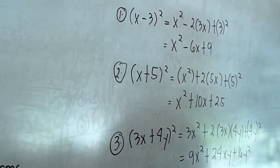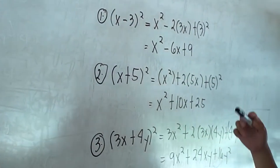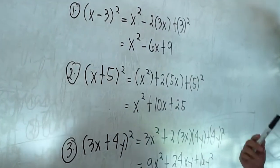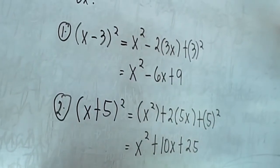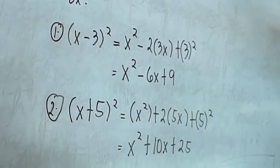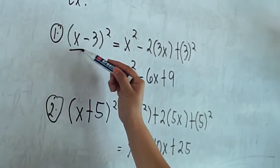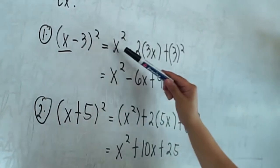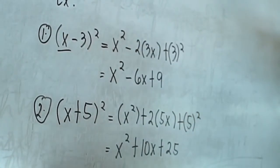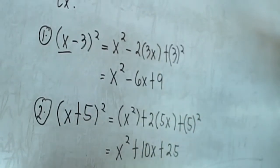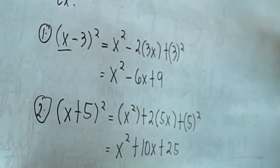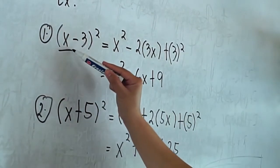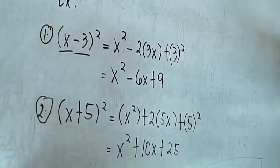In our given example, (x minus 3) squared is equal to — first we have to square the first term. The first term here is x, so the square of x is x squared. Then second, twice the product of the first and the last term. This is the first term and this is the last term.